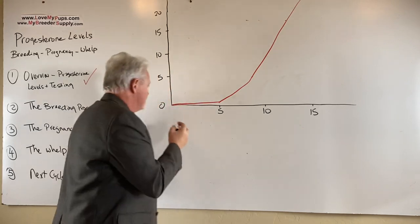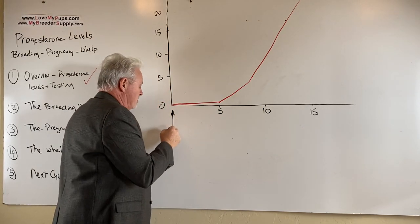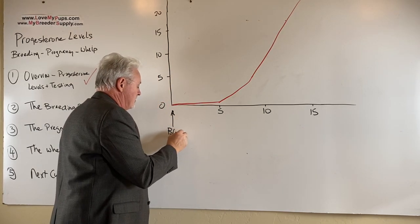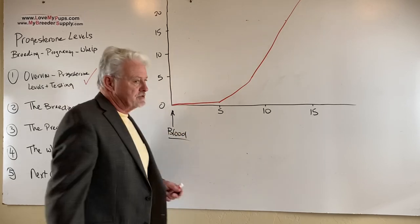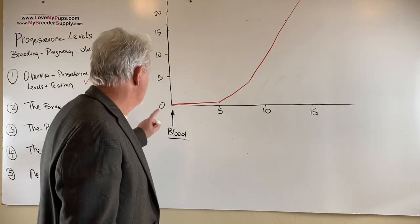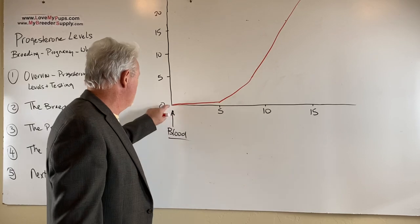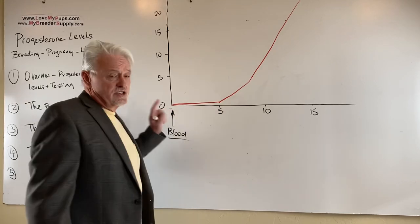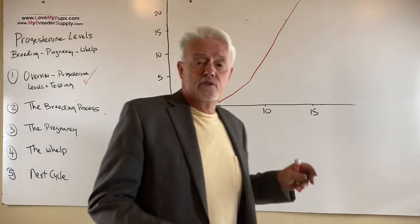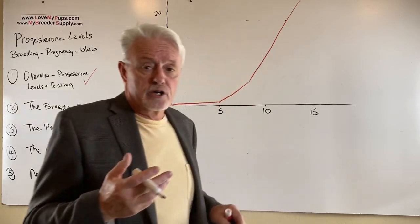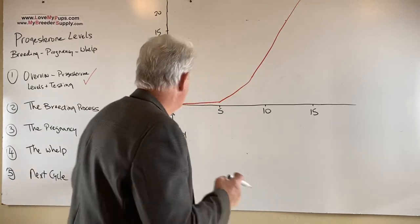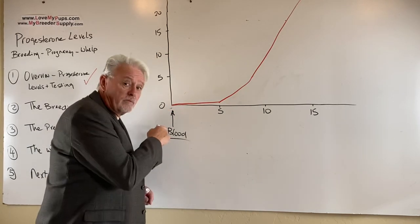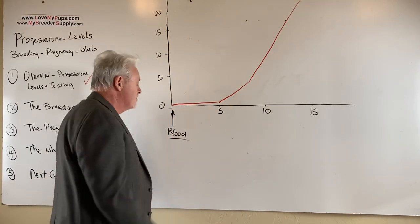All right, so this is the starting point. The whole thing is started when we see first signs of blood on the ground, in some bedding, on some panties. This is zero, day zero, beginning the whole process. Before that, we might have seen some swelling, we might have seen some behavior where she's humping on other dogs, other dogs are humping her, she's sniffing dog's butts, but that's the thing we want, day one. We want to know when that day was.